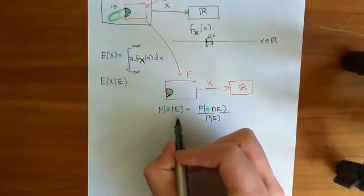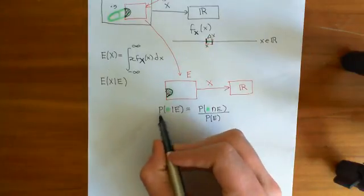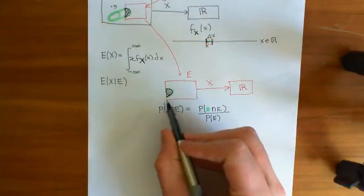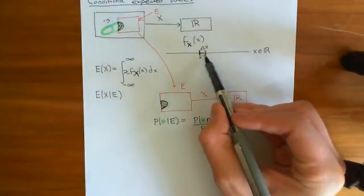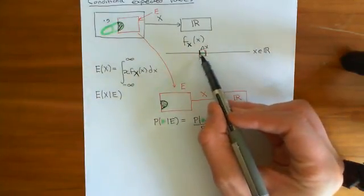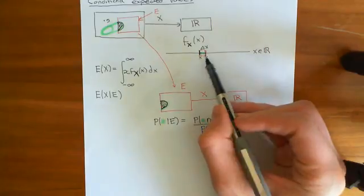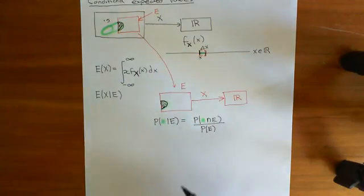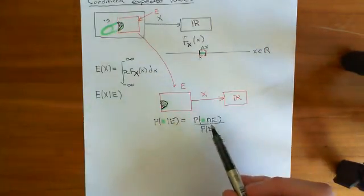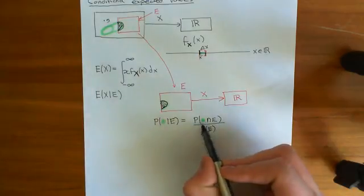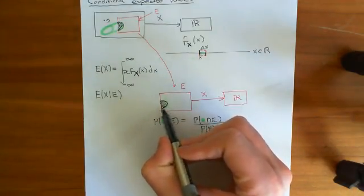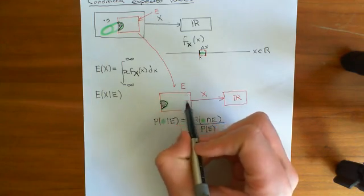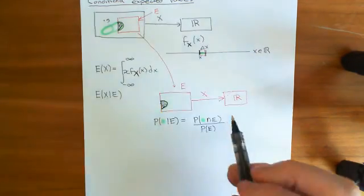So we discussed at the end of the previous video how the conditional probability of the green event, which is this pre-image of the green interval, the event that you are within the interval x to x plus delta x, given that e occurs, is the probability of the portion of the green set which intersects with the event e in the original probability space.